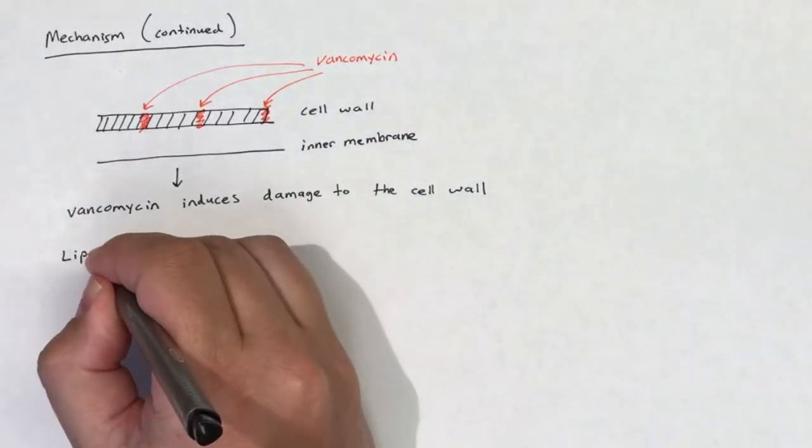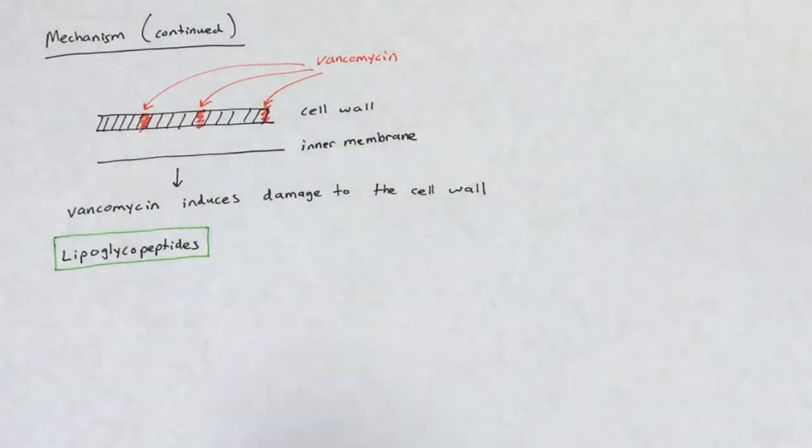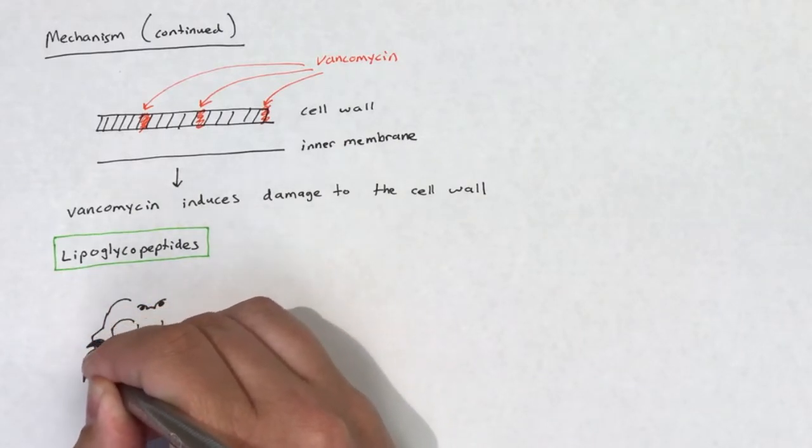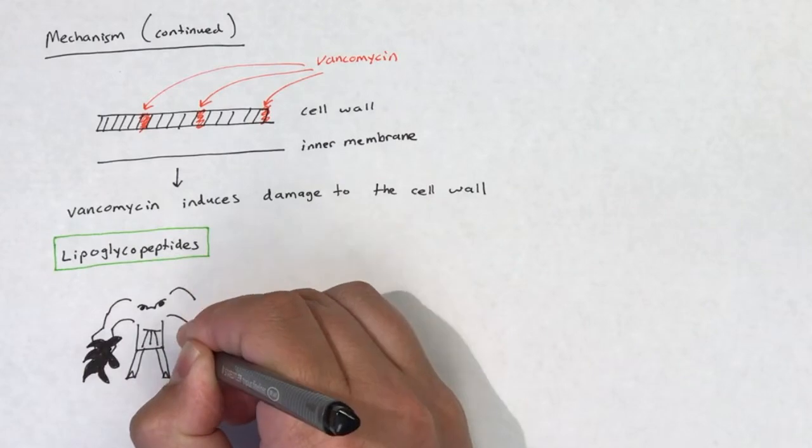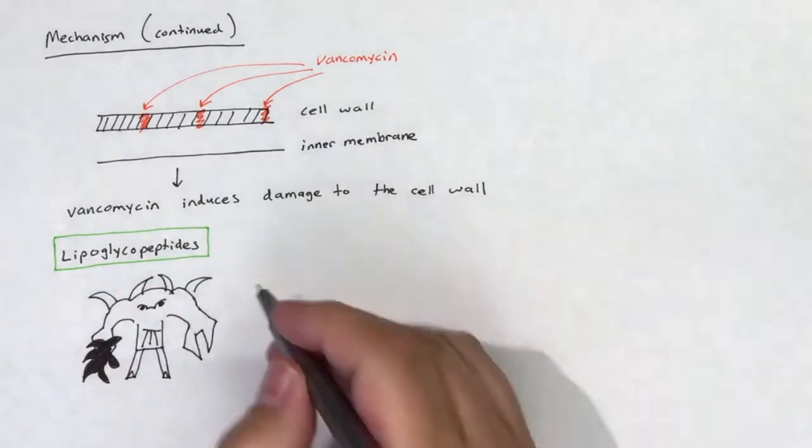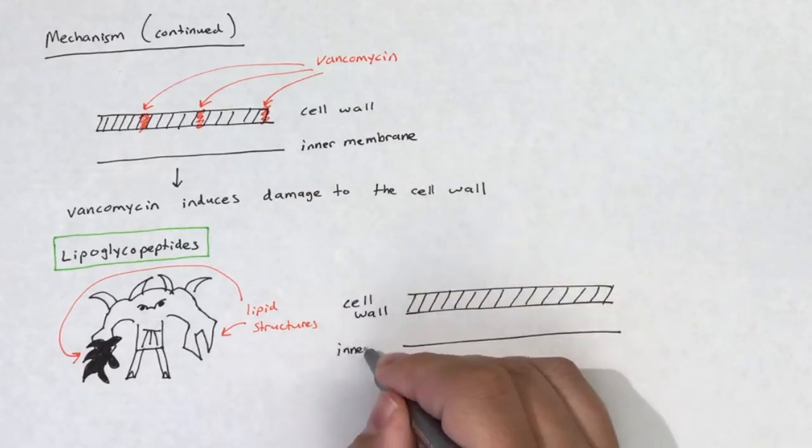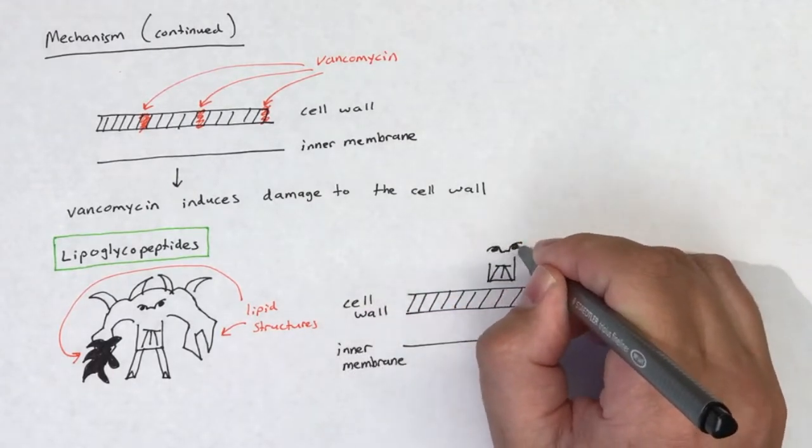The lipoglycopeptides improve upon this process by dimerizing and embedding their lipid structures into the bacterial cell membrane. This allows for improved binding to the D-alanyl-D-alanine terminus and increased potency. On top of the action described above, oritavancin and telavancin have an additional antibacterial mechanism of action.